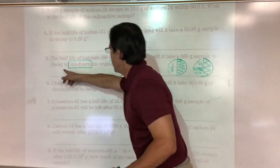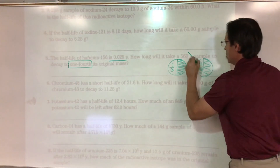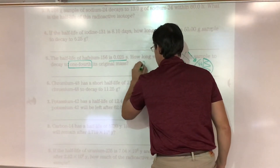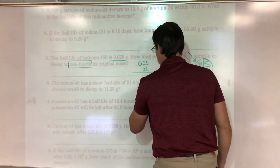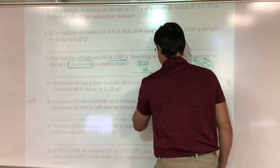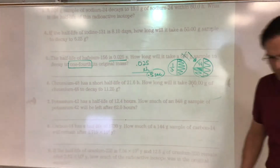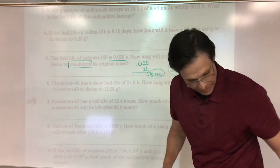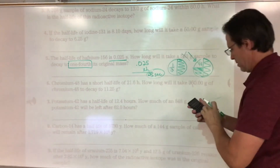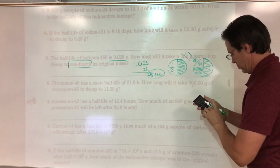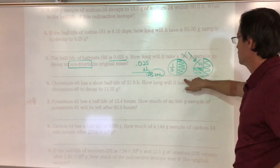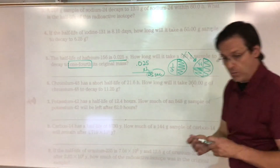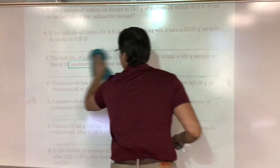The 560 grams is a decoy — you don't need it. It went through two half-lives, so take 0.025 times 2. The answer is 0.05 seconds. One fourth of the original mass equals two half-lives, so don't overthink it.